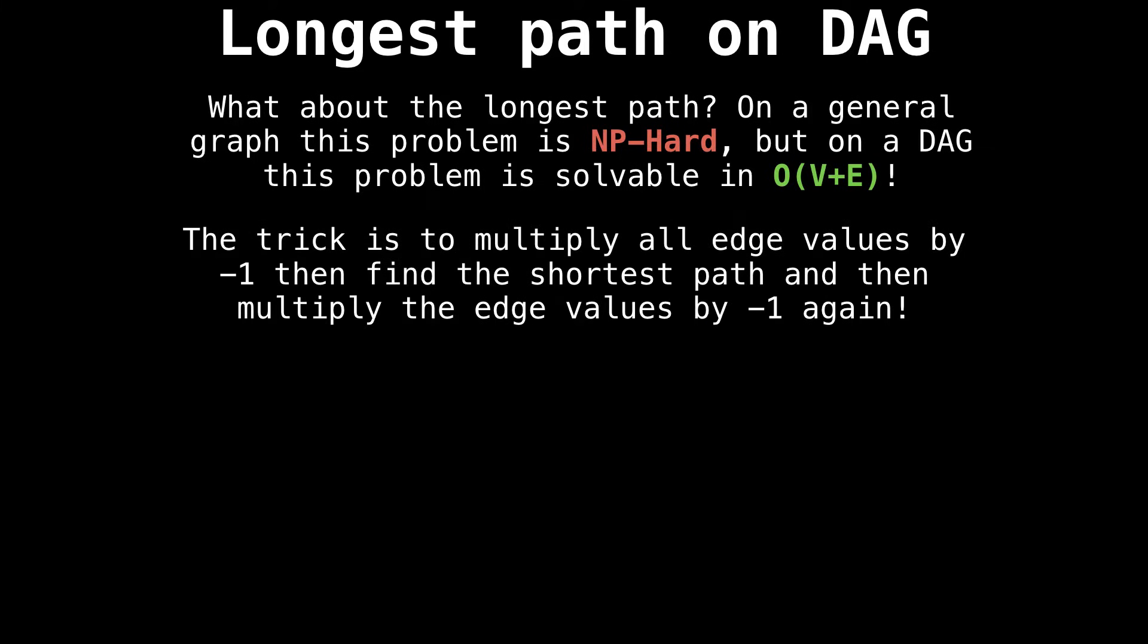The trick is going to be to multiply each edge by minus one, find the shortest path, and then multiply all the edge values by minus one again.